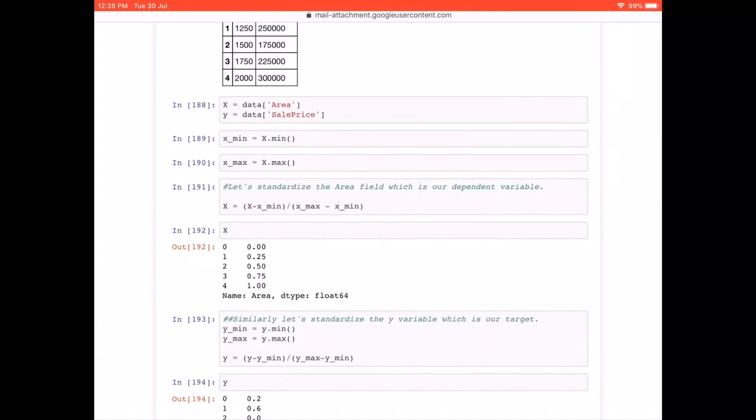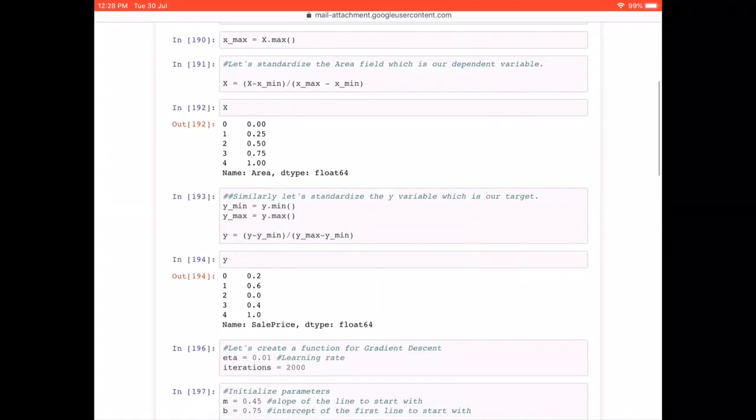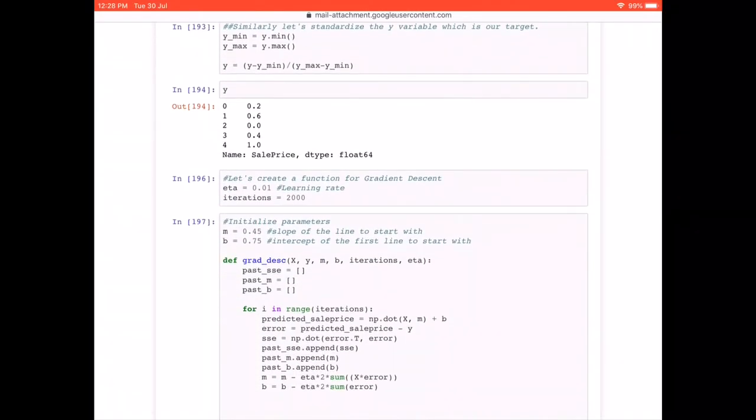So for that, we need the minimum and maximum value of X. And similarly, we would need the minimum and maximum value of Y. And then we are going to divide each values with the X minus X mean divided by the X max minus X mean, that is the way to standardize. And you can match that this is the exact values that we got when we were doing the theoretical concept building. So we do both for X and Y, the standardized method.